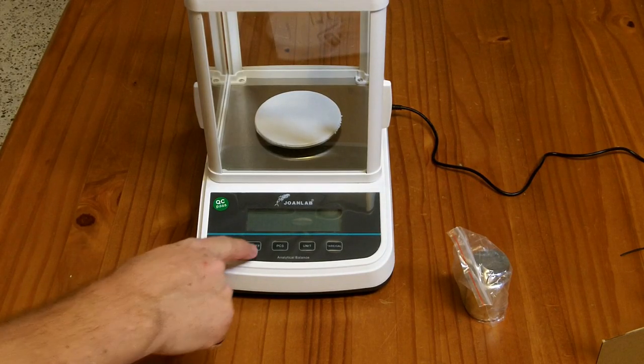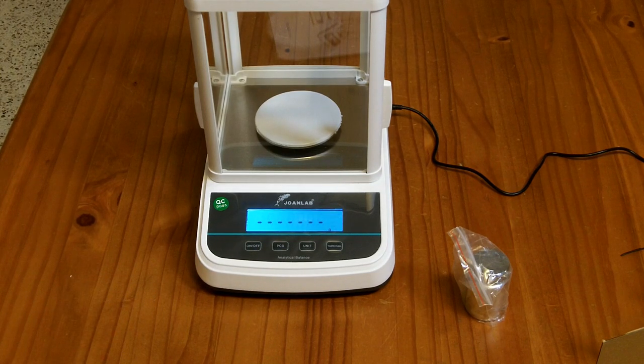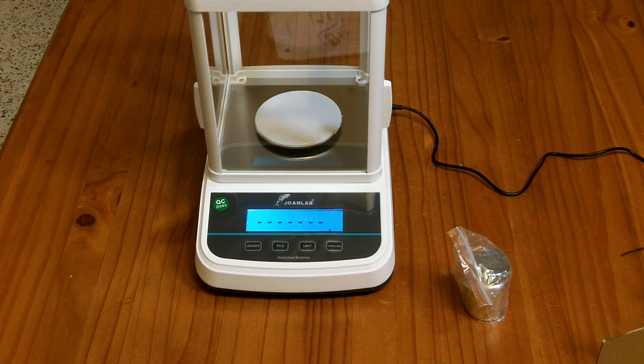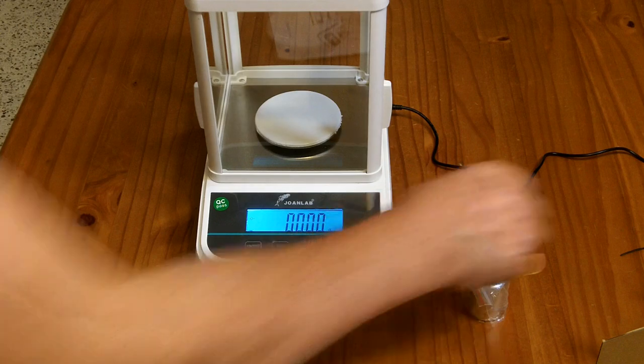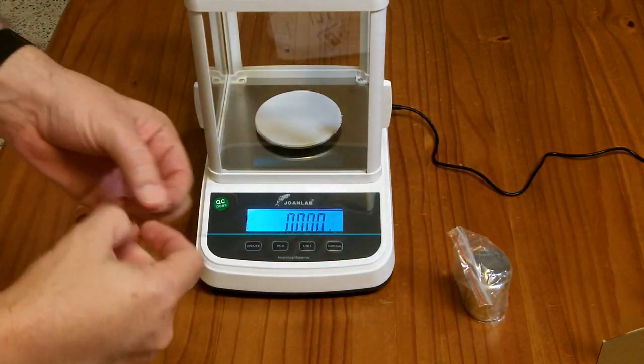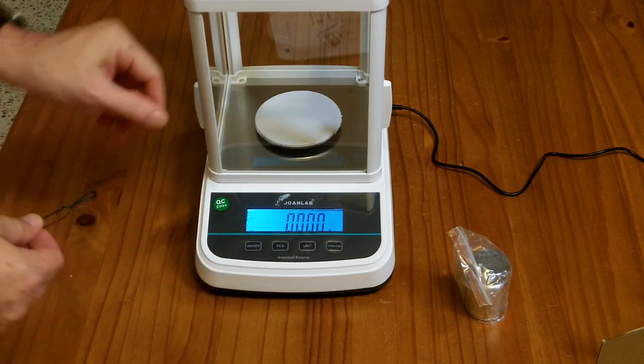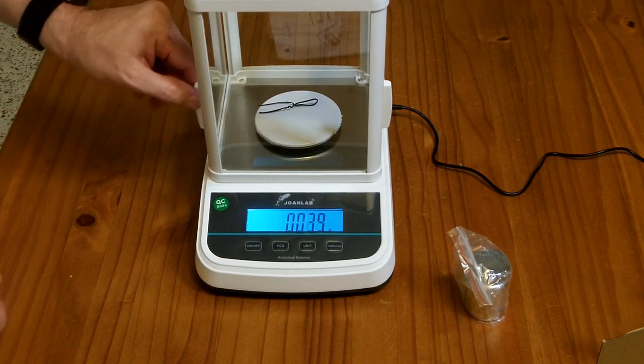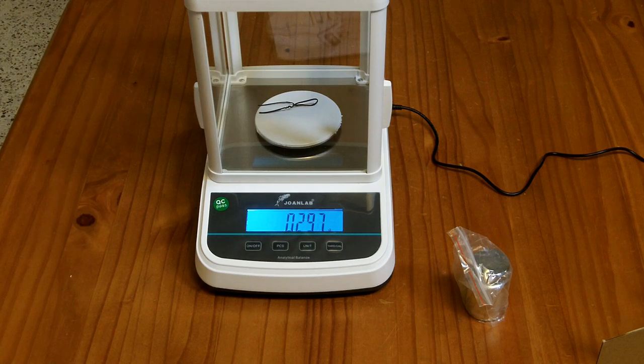Alright, so I've plugged it in, turned it on. It's a whole bunch of dashes and then it went to a whole bunch of zeros. So we're going to put this little twisty tie that was holding the power cord together on it. And according to this scale that is .296 grams. So basically a third of a gram or a little under a third of a gram.